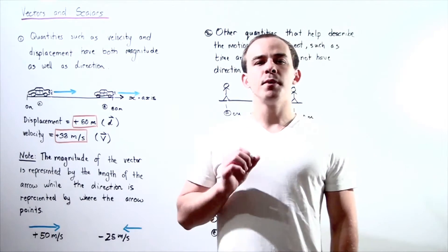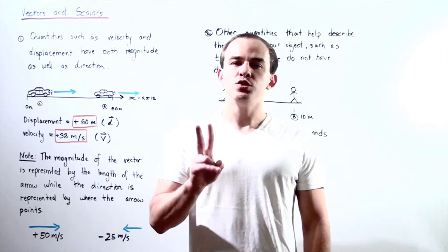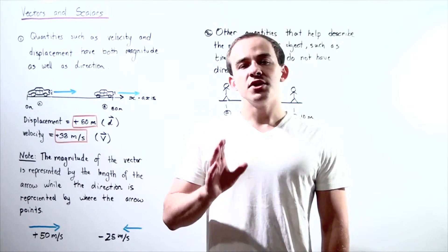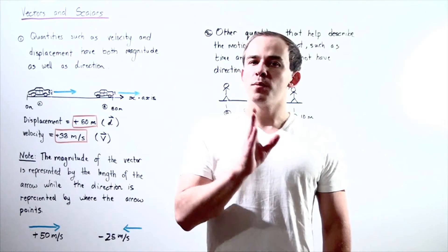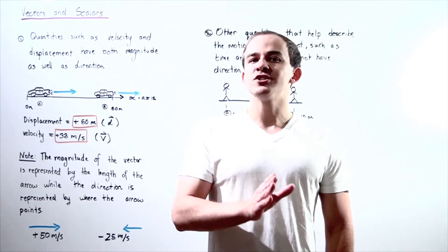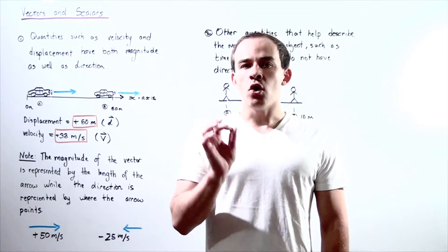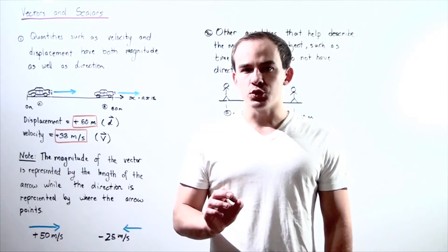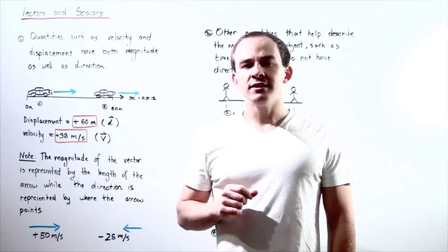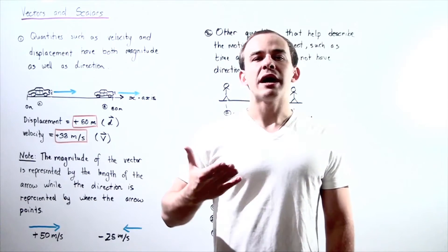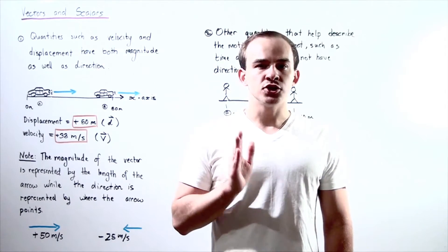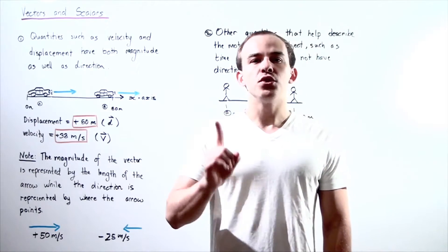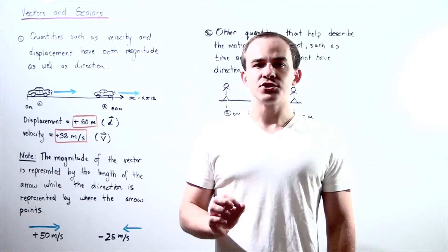In an earlier lecture, we spoke about two types of physical quantities. We mentioned that there are quantities that have both magnitude as well as direction, and there are also quantities that only have magnitude. Physical quantities that describe the motion of an object, such as displacement and velocity, have both magnitude as well as direction.